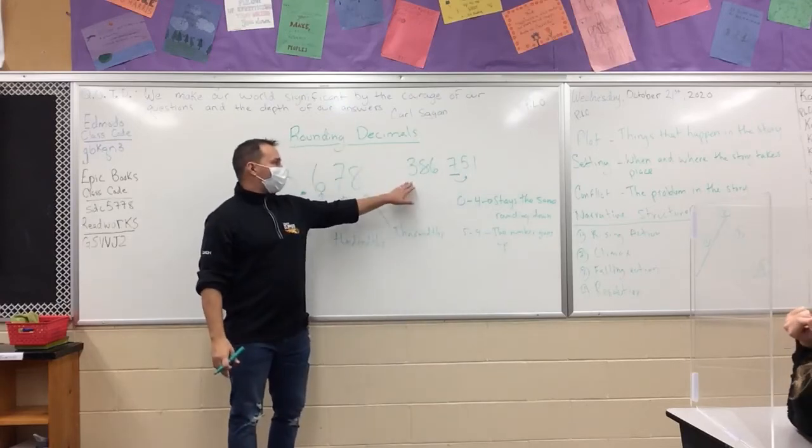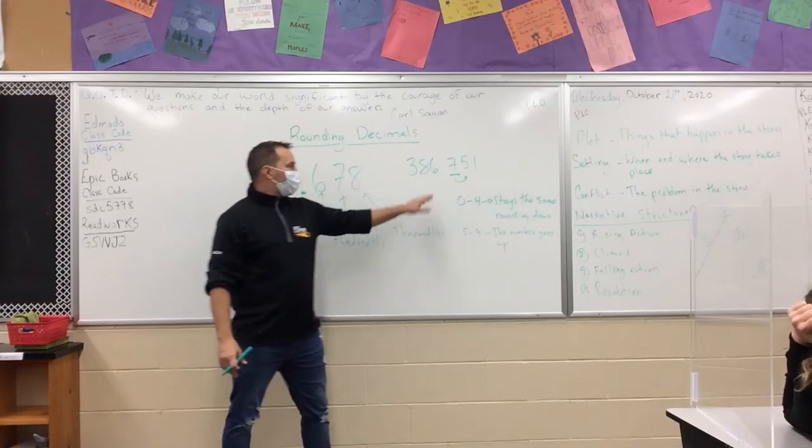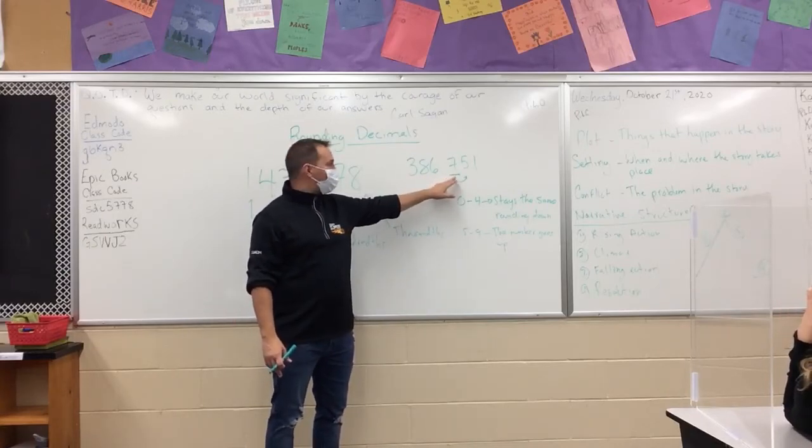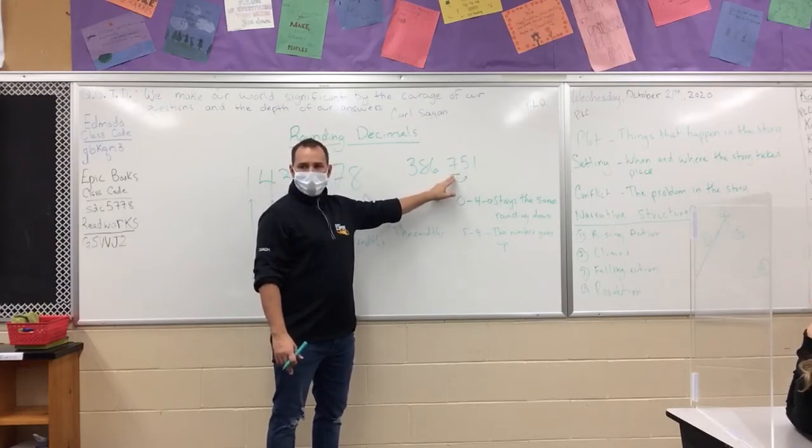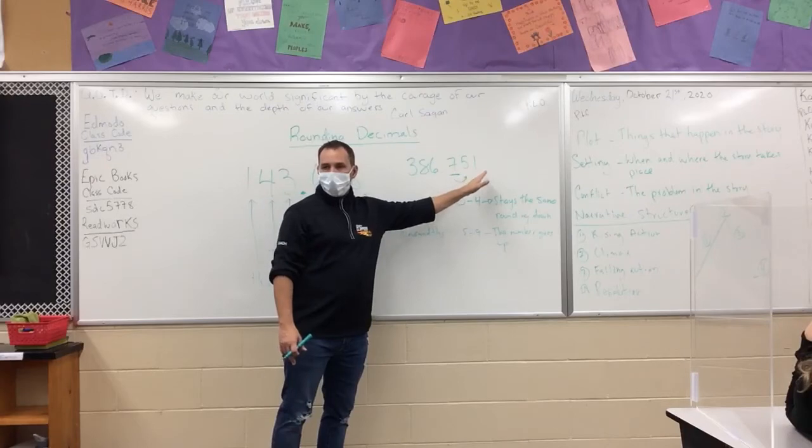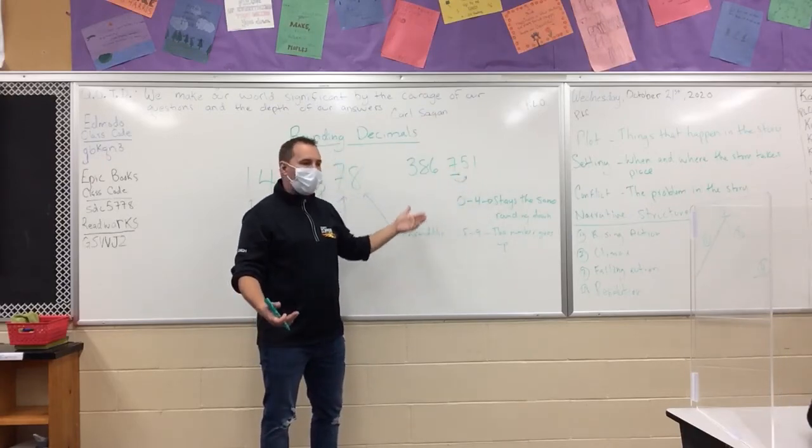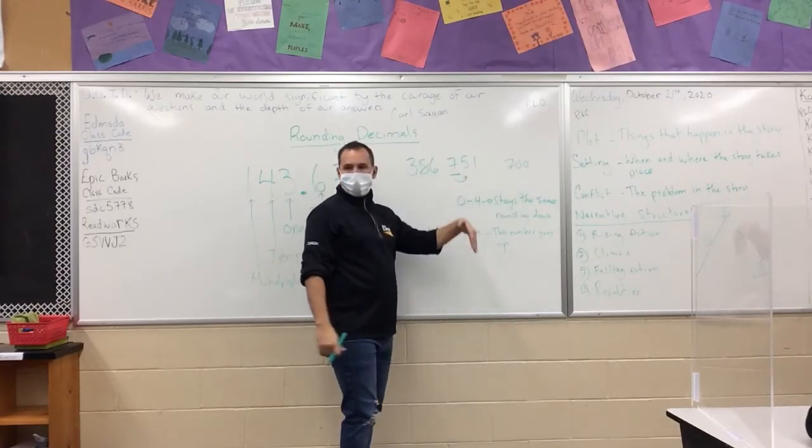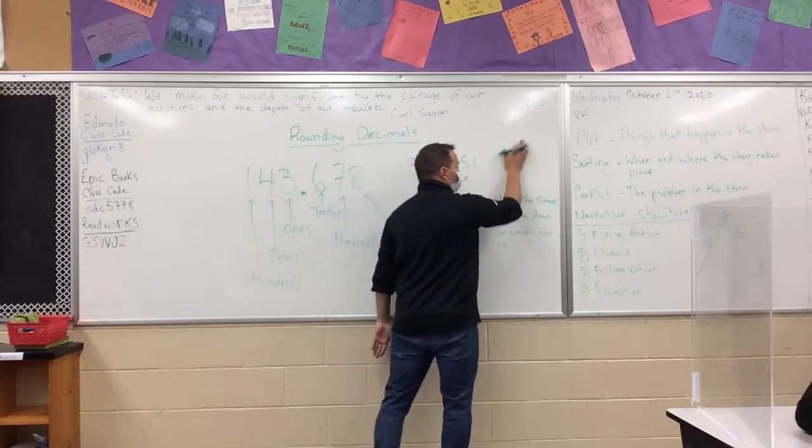When we look at something like this, 386.751, round to the nearest tenth, we say okay, the tenth is the 7, so that's the number we're rounding. Are we going to keep it at 7 and make everything else 0? That's what rounding down means. If we were to round it down, we'd go from 751 to 700. But are we going to round it down?